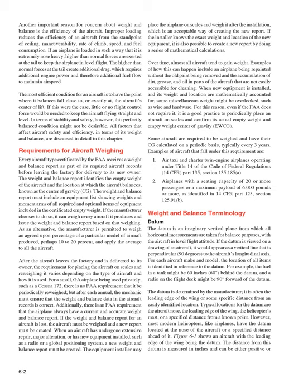Some aircraft are required to be weighed and have their CG calculated on a periodic basis, typically every three years. Examples include: (1) air taxi and charter twin-engine airplanes operating under 14 CFR Part 135, Section 135.185A; and (2) airplanes with a seating capacity of 20 or more passengers or a maximum payload of 6,000 pounds or more, as identified in 14 CFR Part 125, Section 125.91B.